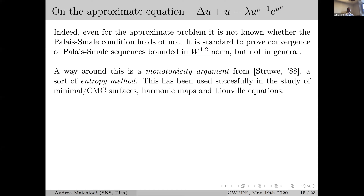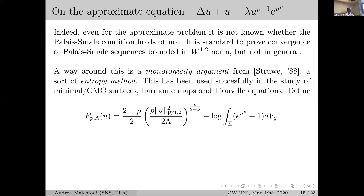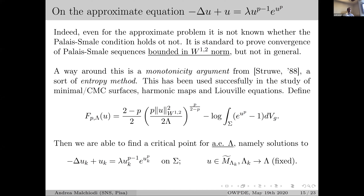For the approximate equation with exponent p < 2, compactness of Palais-Smale sequences is not known in general. We use a monotonicity argument by Struwe — an entropy method — introducing an extra parameter (the constraint value λ) and selecting optimal values to gain compactness. This was used successfully in minimal surfaces, harmonic maps, and Yamabe equations. The result is that we find critical points for almost every value of λ: we find sequences λ_k and solutions in slightly different constraints M̃_{λ_k} solving the constrained Euler-Lagrange equation.